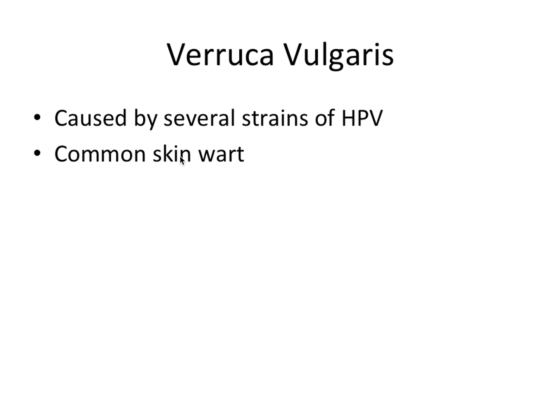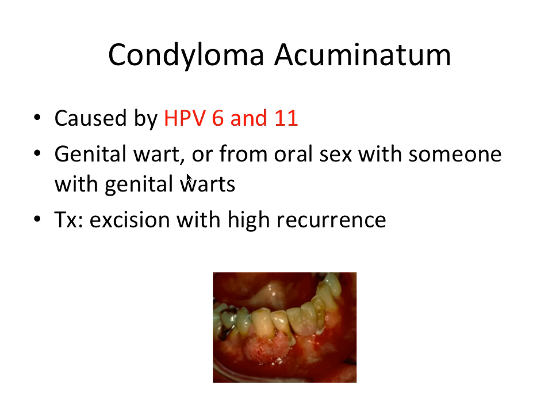Verruca vulgaris is caused by several different strains of HPV and is a common skin wart. It can appear anywhere on the skin. You can also auto-inoculate it — so if it's on one finger and you're picking at it, it can appear on another finger through a cut, and so on.